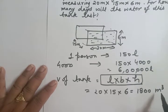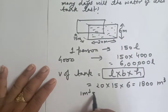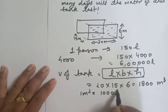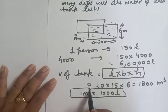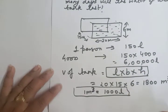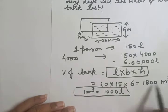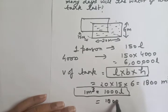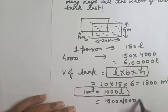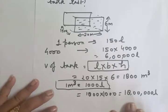This is given in cubic meters, so we need to convert it to liters. We know that 1 cubic meter equals 1000 liters. So instead of 1 cubic meter, we put the value in liters: 1800 × 1000 = 18 lakh liters. So the capacity of the tank is 18 lakh liters.